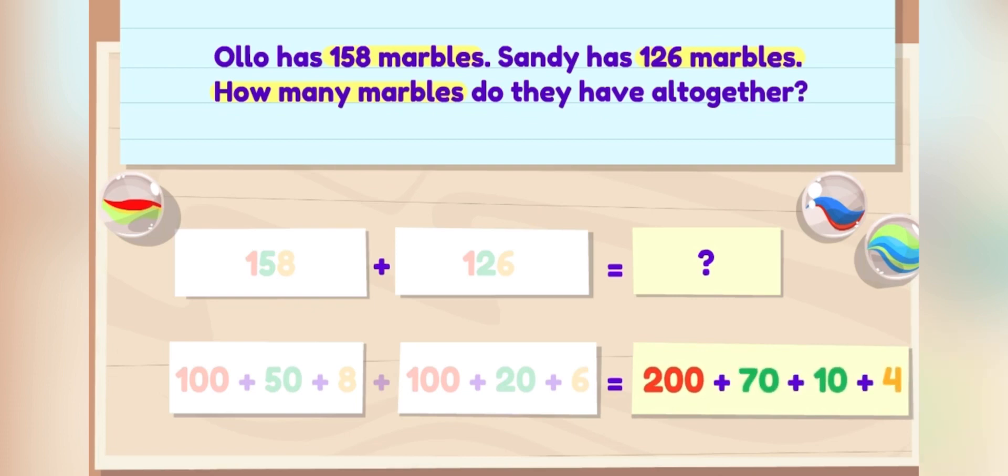I see two sets of tens that can be added together. 70 plus 10 equals 80. The sum is 200 plus 80 plus 4, which is 284. Allo and Sandy have 284 marbles all together.